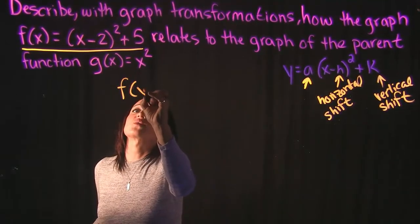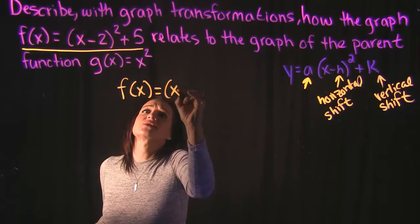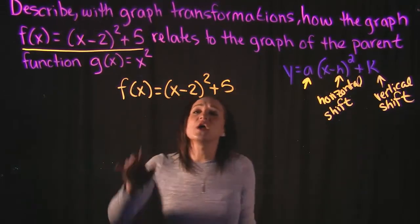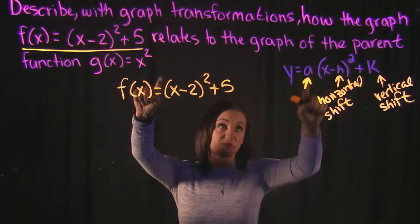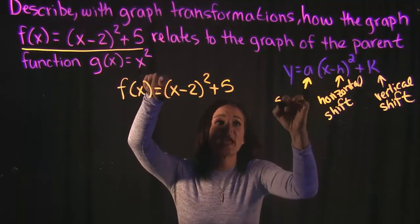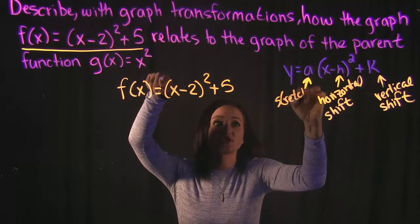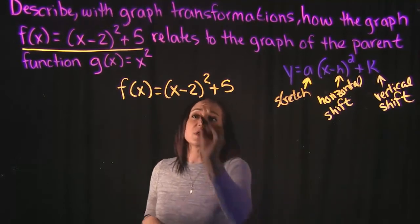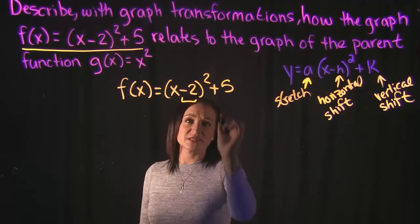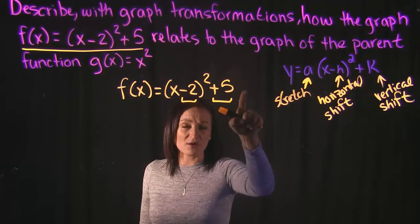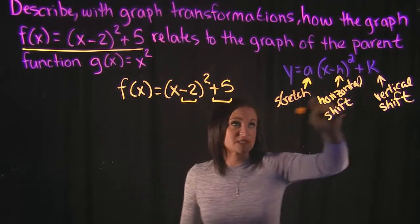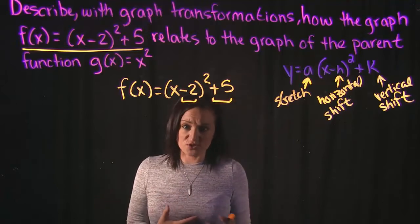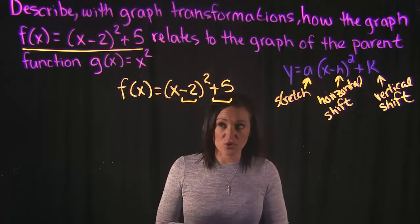Looking at the graph we're given, f of x equals x minus 2 squared plus 5, we don't have anything in front of the parentheses, so there's no A — no stretch happening here. We do have a number inside the parentheses and a number outside the parentheses, representing H and K. So we do have a horizontal shift and a vertical shift.